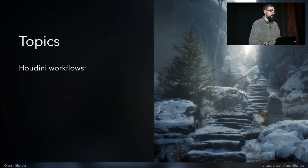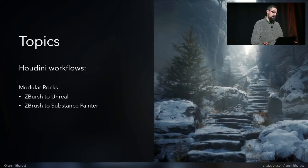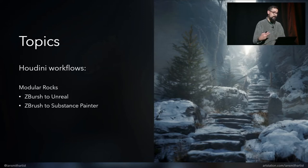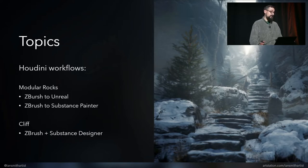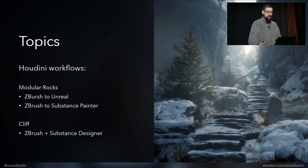I'm going to break down a couple of different example projects. The first will be a set of modular rock sculpts — using Houdini to take early work-in-progress ZBrush sculpts, reduce the poly count, quickly export to Unreal, generate the low poly UV model for baking in Painter, and iterate backwards and forwards between software packages. The second example will be a larger cliff asset, using displacement maps created in Designer tiled across the ZBrush sculpt, displacing geometry inside Houdini, and exporting an optimized version to Unreal.